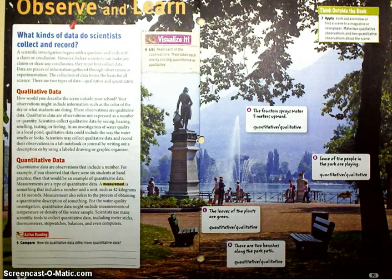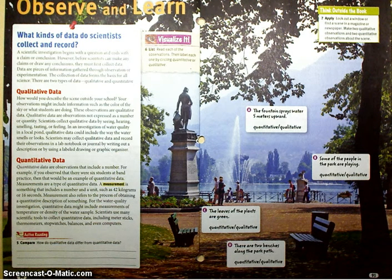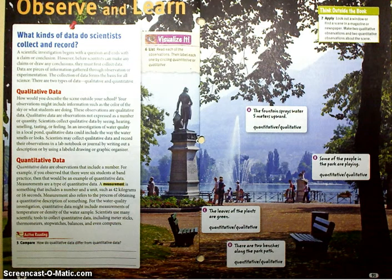A scientific investigation begins with a question and ends with a claim or conclusion. However, before scientists can make any claims or draw any conclusions, they must first collect data. Data are pieces of information gathered through observation or experimentation — that's one of your vocabulary words. The collection of data forms the basis for all science.